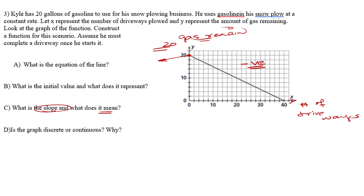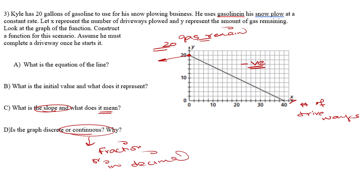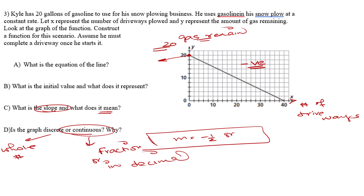Is the graph discrete or continuous? Remember: a continuous function means that if we have values in fractions or decimals in our answer, then the function is continuous. If it is a whole number only — like 2, 4, 6, 8, or 3, 5, 9, any number without a decimal — then it is a discrete function. Our slope is negative one half, which is a fraction, or negative 0.5 as a decimal. So the function is continuous.